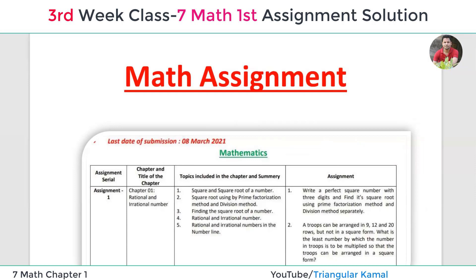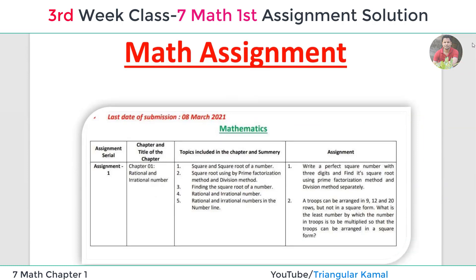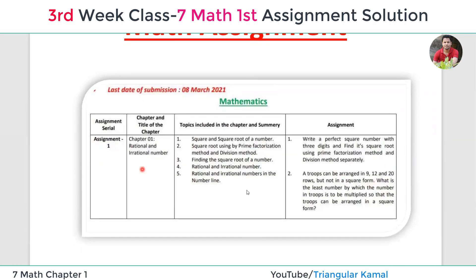First, let's review question one: What is the perfect square number with three digits? Find the square root by using the prime factorization method and division method separately.